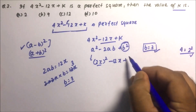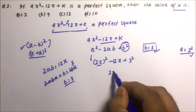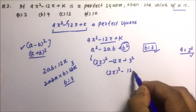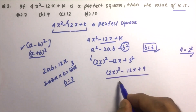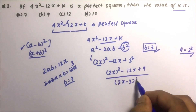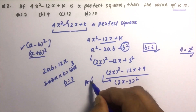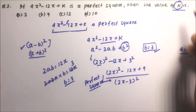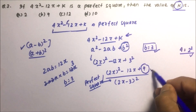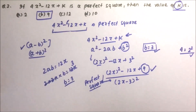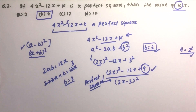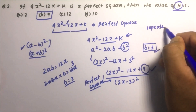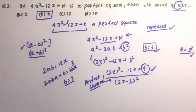With b = 3, our expression becomes (2x)² - 2(2x)(3) + 3² = 4x² - 12x + 9, which is now a perfect square in the form (2x - 3)². Therefore, k = 9, which is option B. This type of problem is repeated many times in SSC examinations.